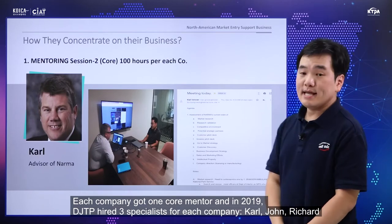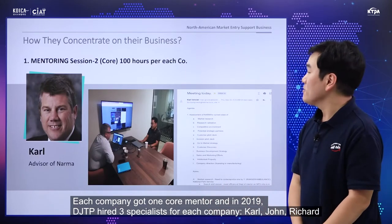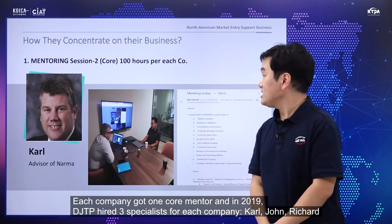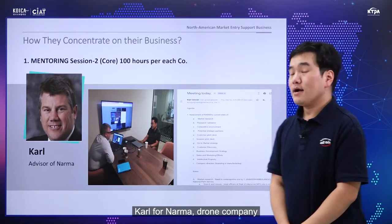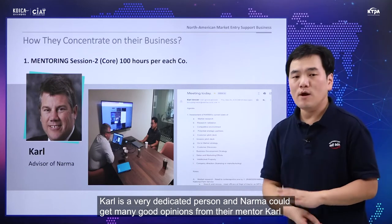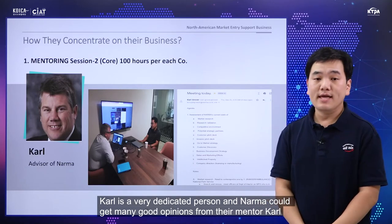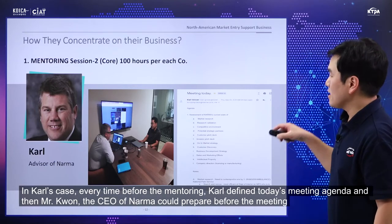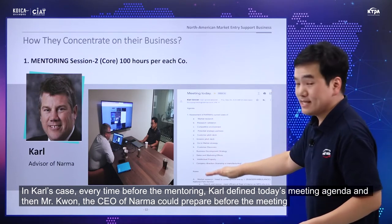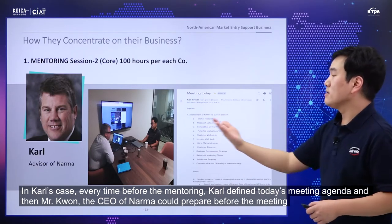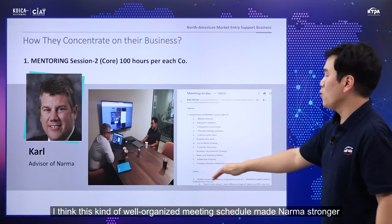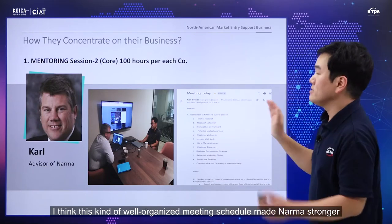Each company got one core mentor. In 2019, Daejeon Technopark hired three specialists: Carl, John, and Richard. Carl was assigned to Naruma and the drone company. Carl was a very dedicated person, and Naruma could get many good opinions from him. Every time, before mentoring, Carl defined the meeting agenda so that Mr. Kwon, CEO of Naruma, could prepare beforehand. This well-organized meeting schedule made Naruma stronger.